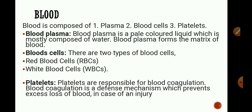Plasma is a pale colored liquid which is mostly composed of water — about 92% water and many proteins. Plasma transports food, carbon dioxide, and nitrogenous waste in dissolved form.